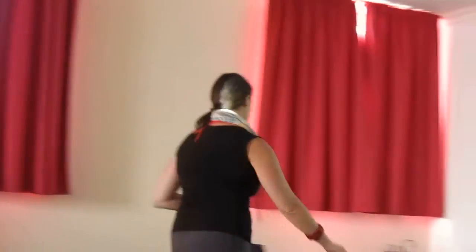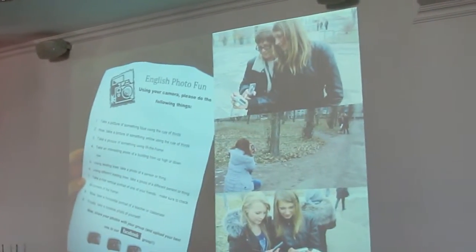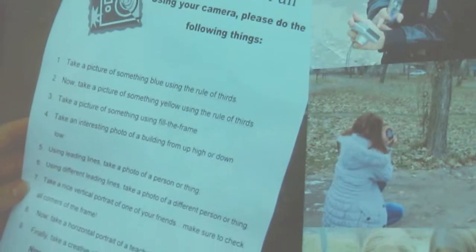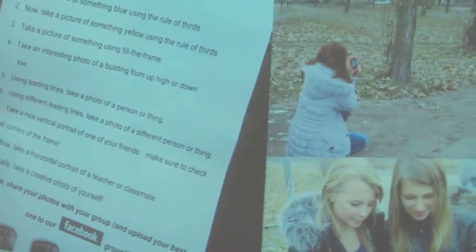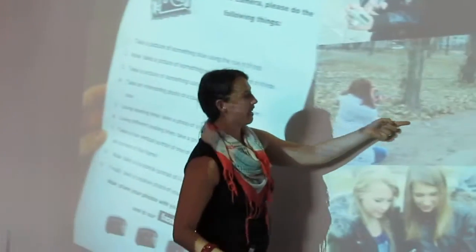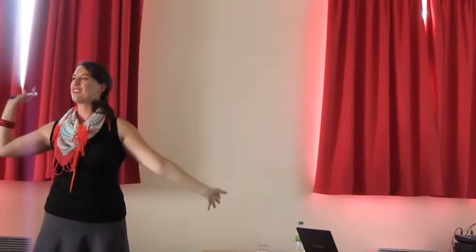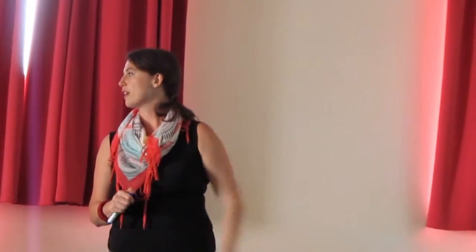After the whole session, I gave them a scavenger hunt. For example: take a picture of something blue using the rule of thirds; take a picture of something yellow; take a picture using fill the frame; take an interesting photo of a building from up high or down low; use leading lines — where the line leads the eye to the subject. They learned all this first, then went off into their neighborhood.